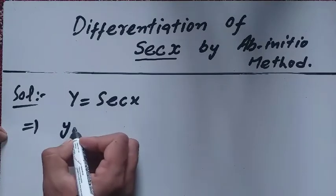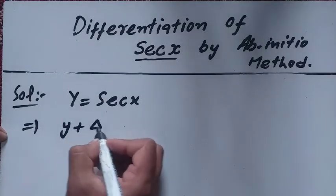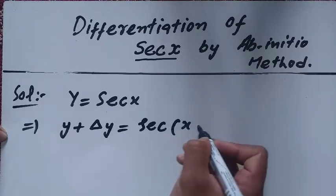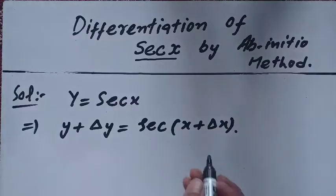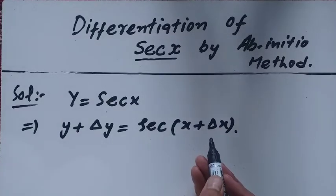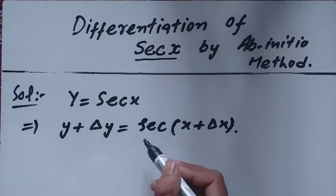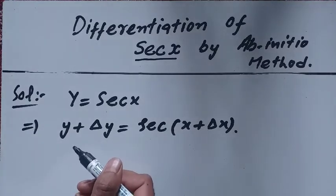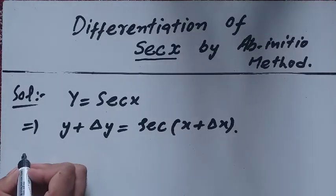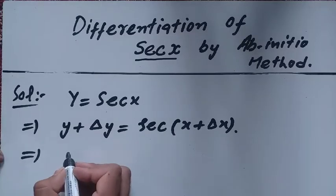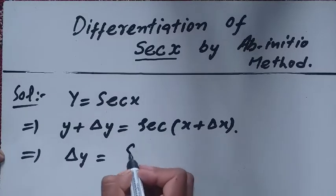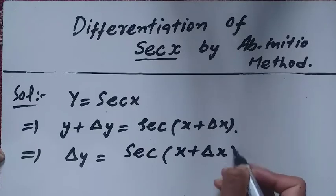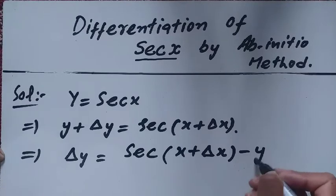We can write y plus delta y is equal to sec of x plus delta x. A small change in the independent variable makes a small change in the dependent variable. Here x is the independent variable and y is the dependent variable. So delta y is equal to sec of x plus delta x minus y.